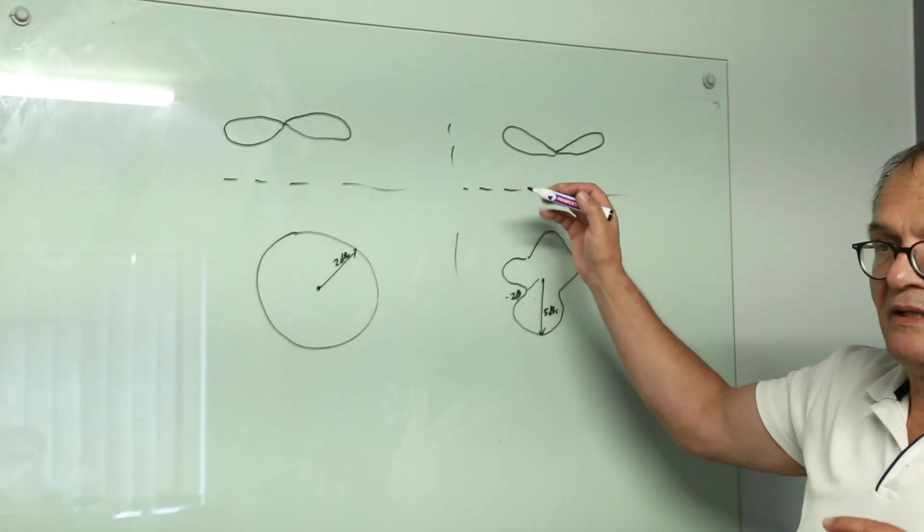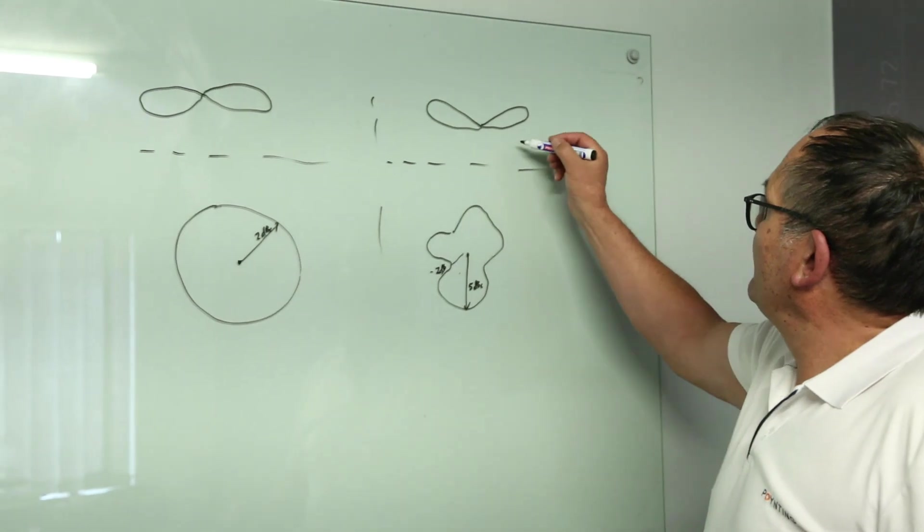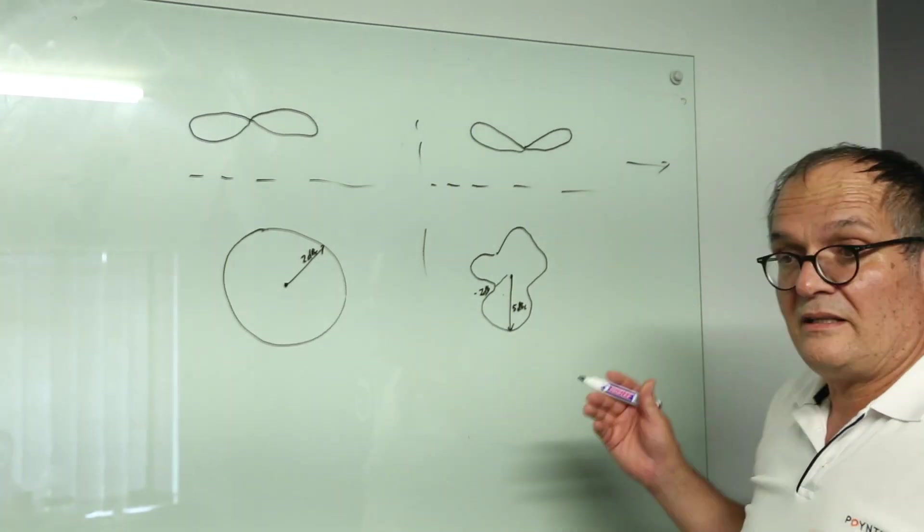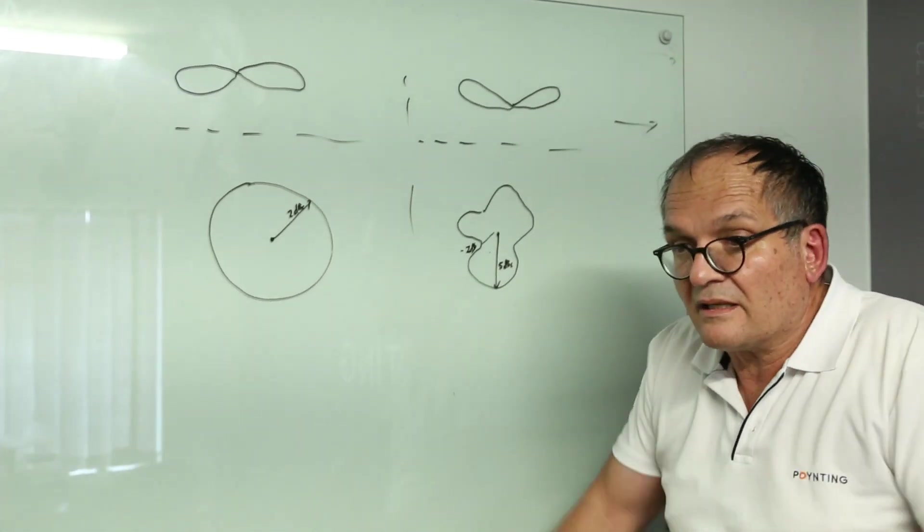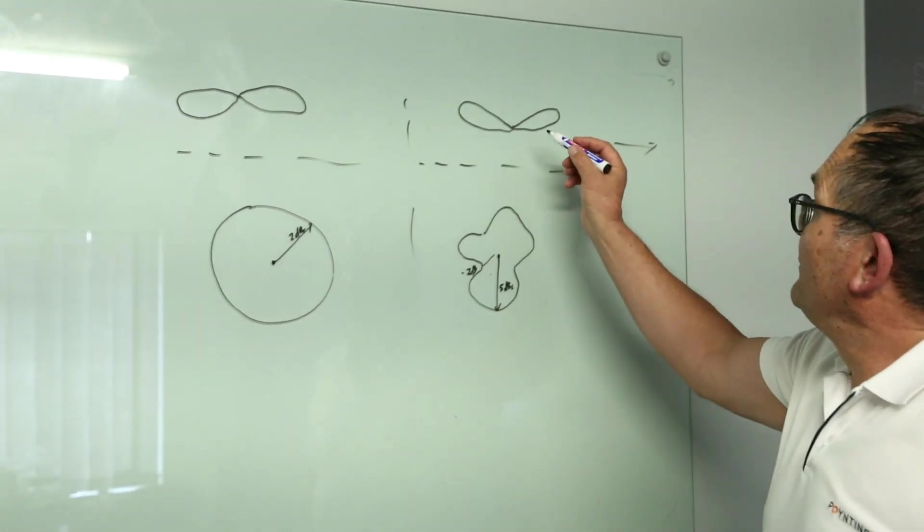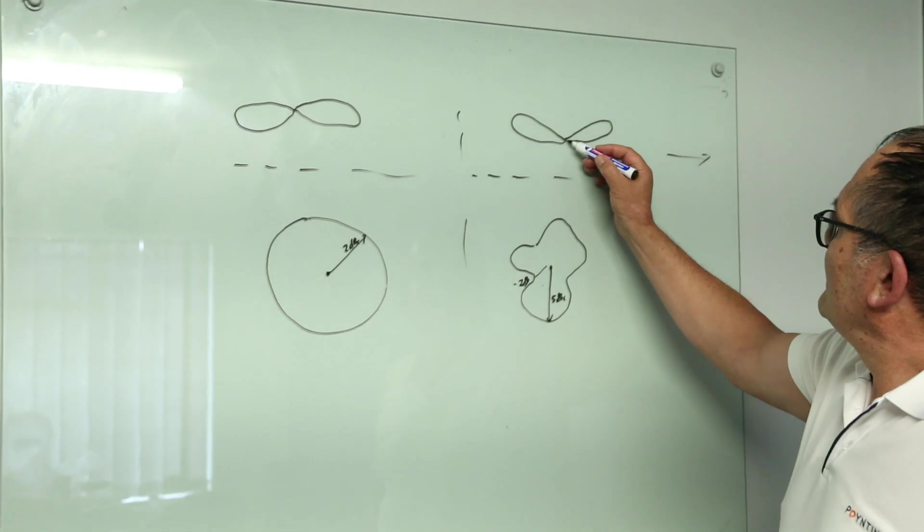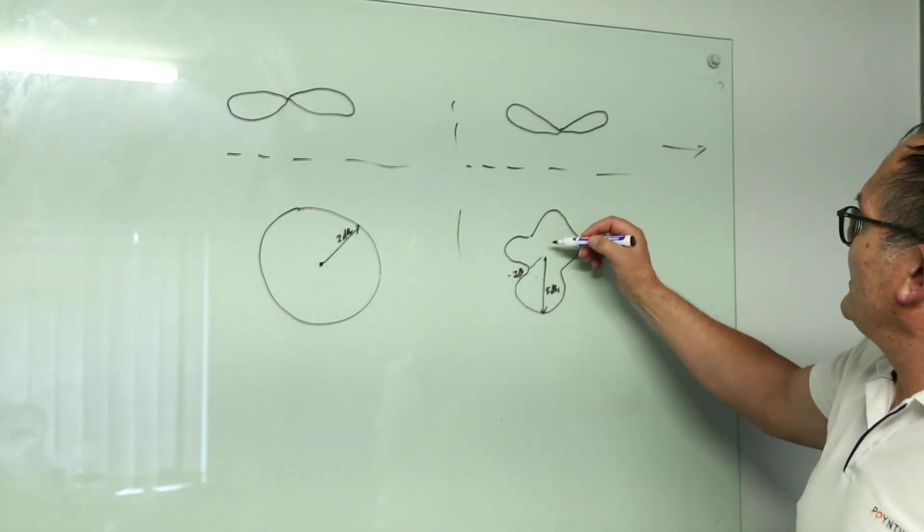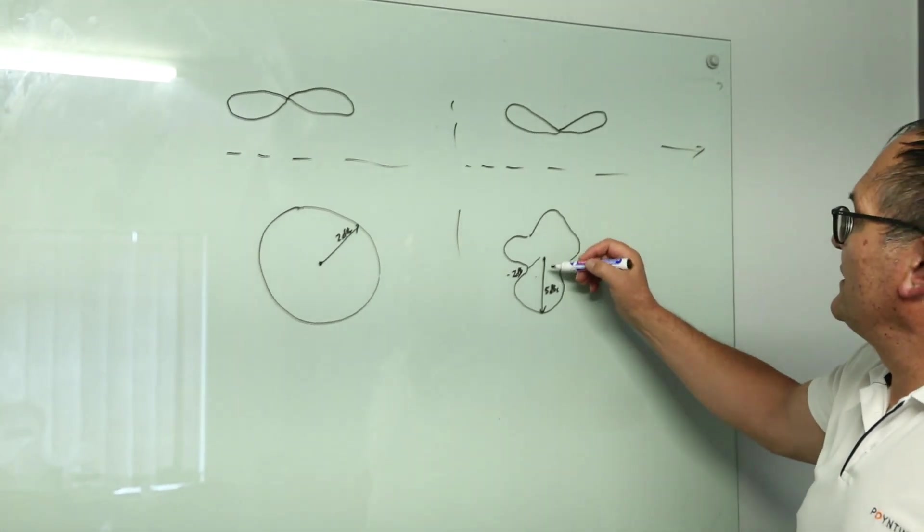The elevation beam, okay, the beam. This beam you want to, of course, point to the horizon. Because it's the only place you're going to get base stations. You're not going to get it underground and you're not going to get it in the sky somewhere. And you'll find that the patterns do this.